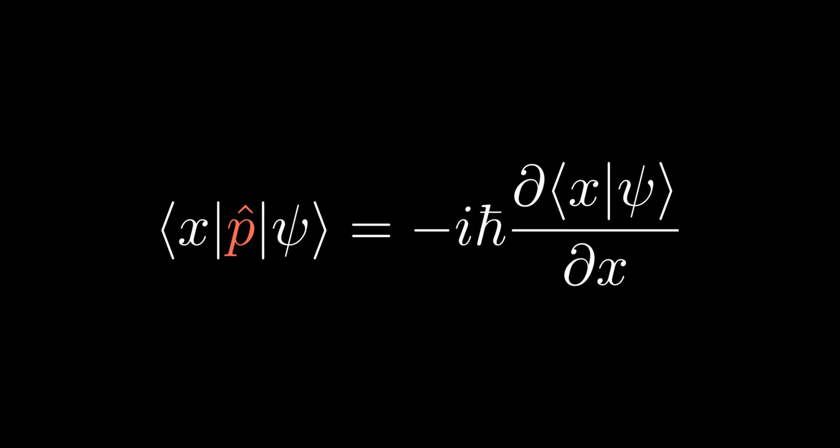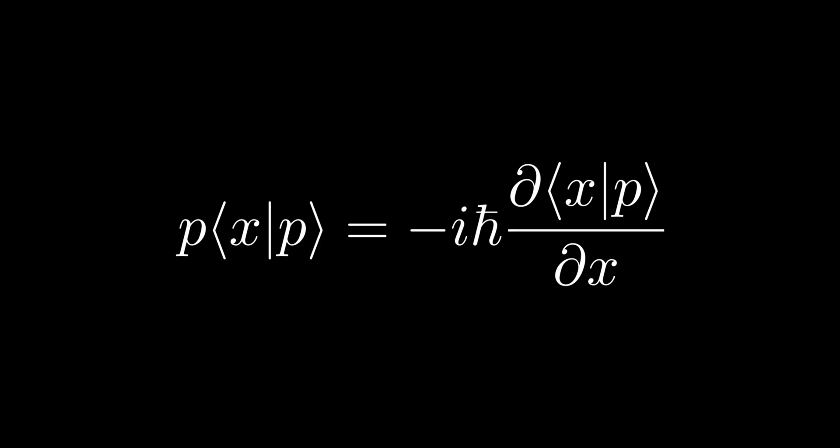An interesting case is when the state is a definite state of momentum and the equation becomes a linear first-order ordinary differential equation, where we have used the fact that ket p is an eigenket of p-hat.